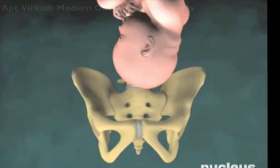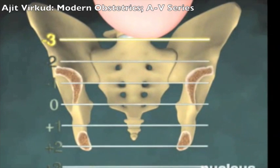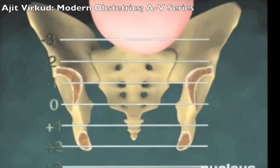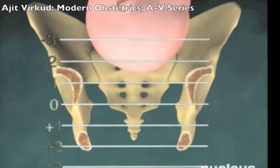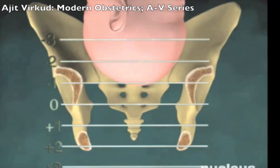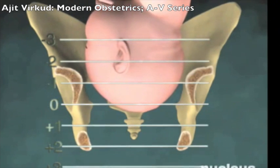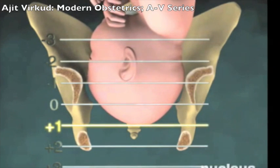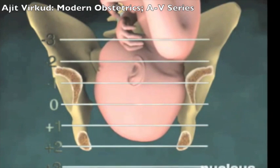The following short animation video will illustrate what is station of head. Station is defined as the relationship of the leading bony point of the fetal head to the ischial spines. When the leading bony point is at the same level as the ischial spine, this is called station zero and the head is said to be engaged. When the head is above the ischial spines, the station is given a negative number and the head is said to be floating. When it is below the ischial spines level, the station is given a positive number. At station plus three, the baby's head is said to be crowning.